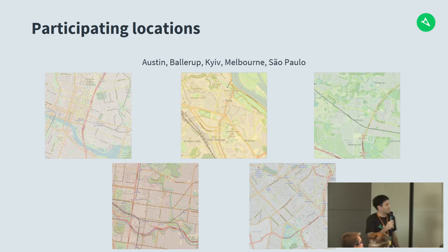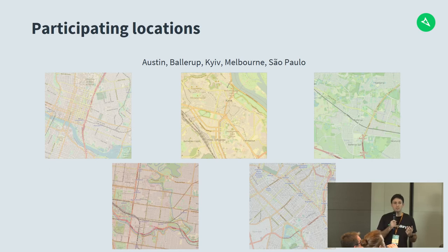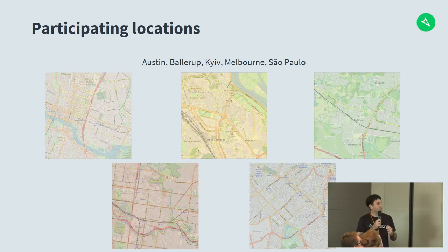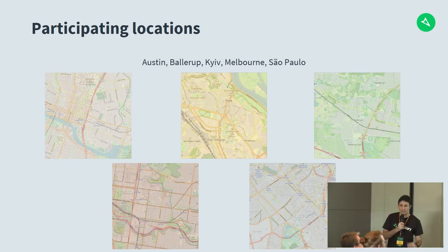The five locations were Austin, Ballerup in Denmark, Kyiv in Ukraine, Melbourne in Australia, and São Paulo in Brazil. The reason for these locations is that we had some really good community members there contributing a lot of imagery who were also familiar with what we do in OpenStreetMap and how Mapillary is used in OpenStreetMap.